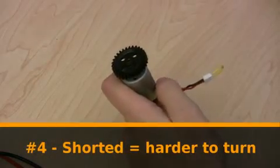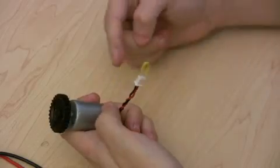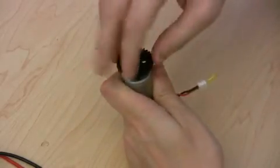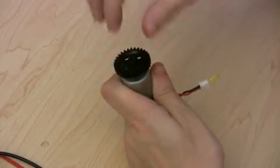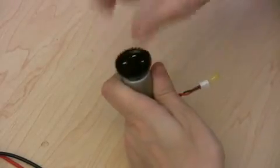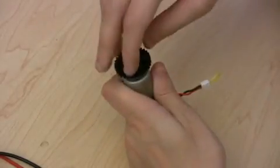Number four: but now, if I put a wire between the two motor terminals, shorting it out, and now I try spinning it, it's actually harder to turn and also doesn't spin freely anymore. This might be hard to see in the video, but if you've never tried this before, give it a shot. You'll be surprised how much different the little wire makes.